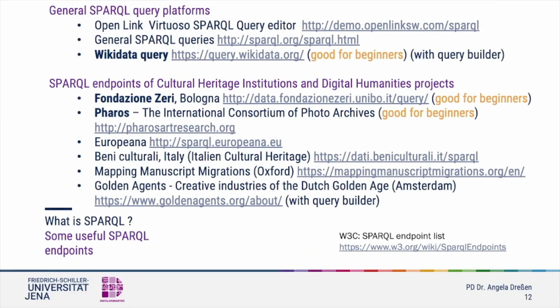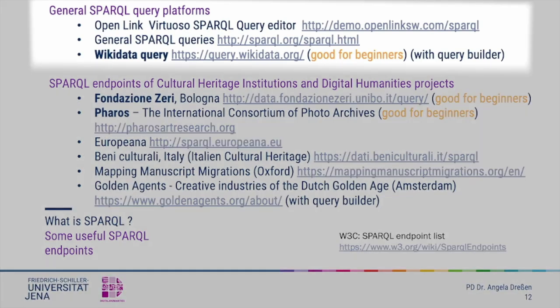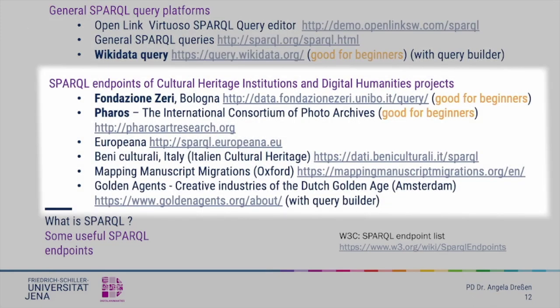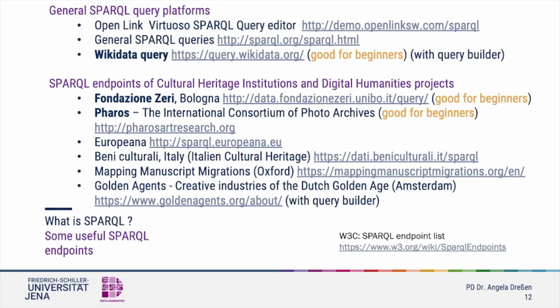Here you find a list of useful SPARQL endpoints. There are general SPARQL query endpoints and institutional endpoints. Through general endpoints like Virtuoso, you can query other institutional endpoints by listing their URL. For now, we are more interested in endpoints of cultural heritage institutions. Some listed here are good for beginners, as they include error messages warning you when your query will probably not be working.